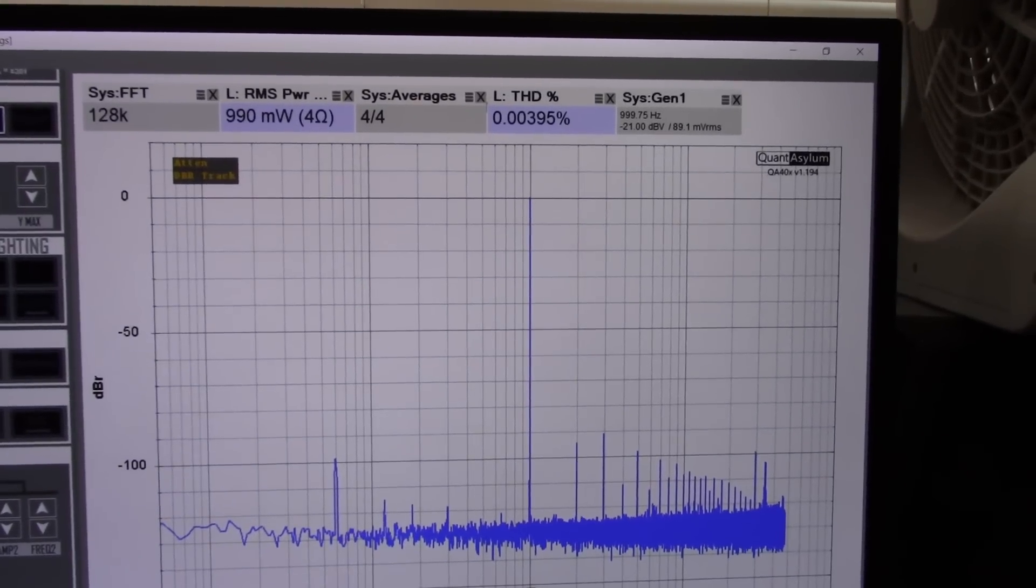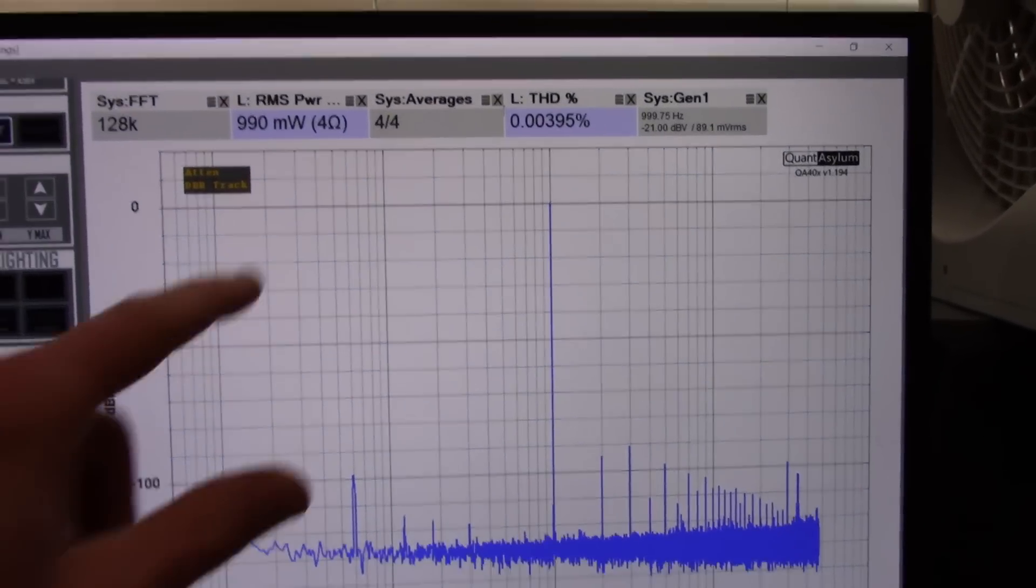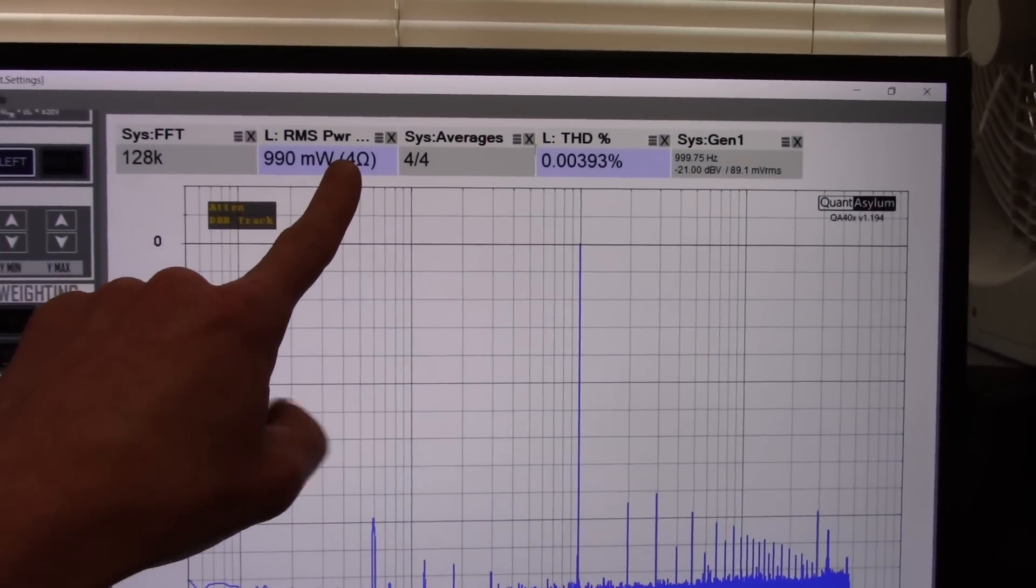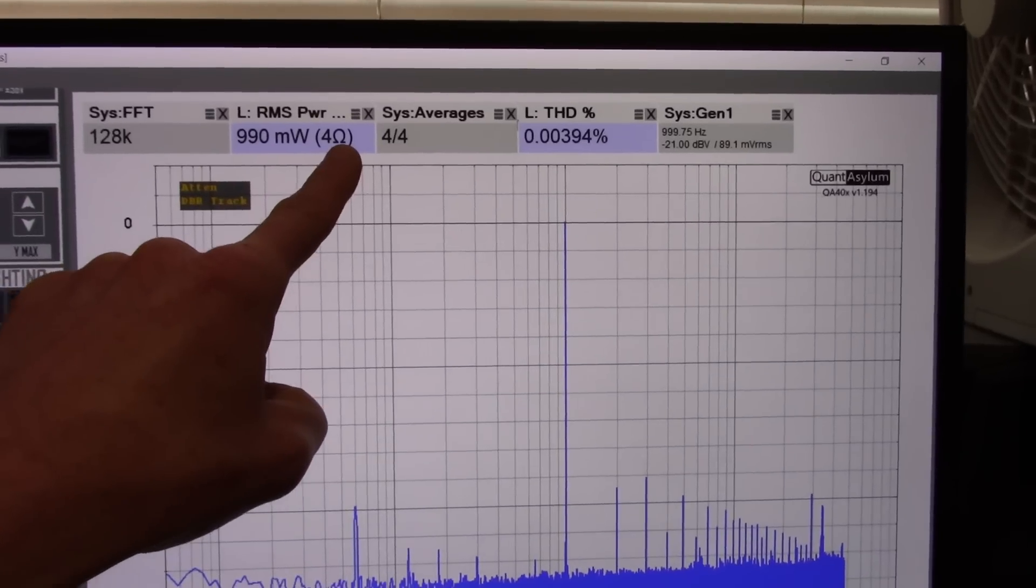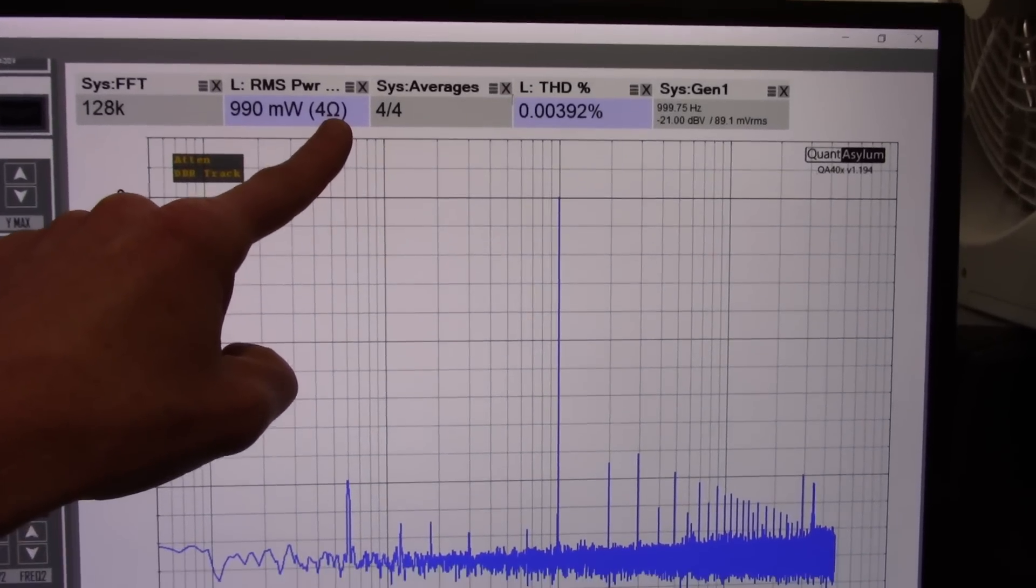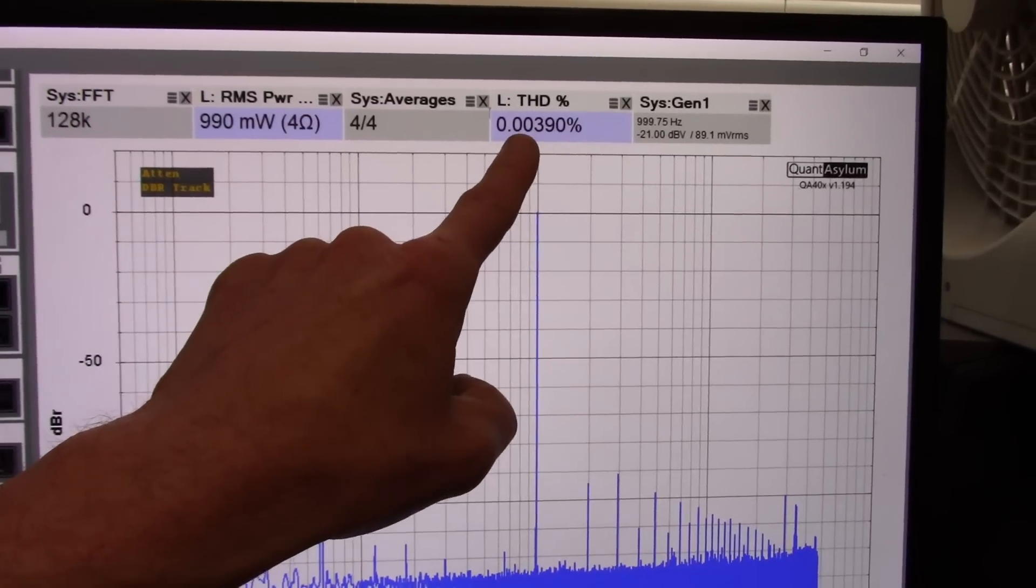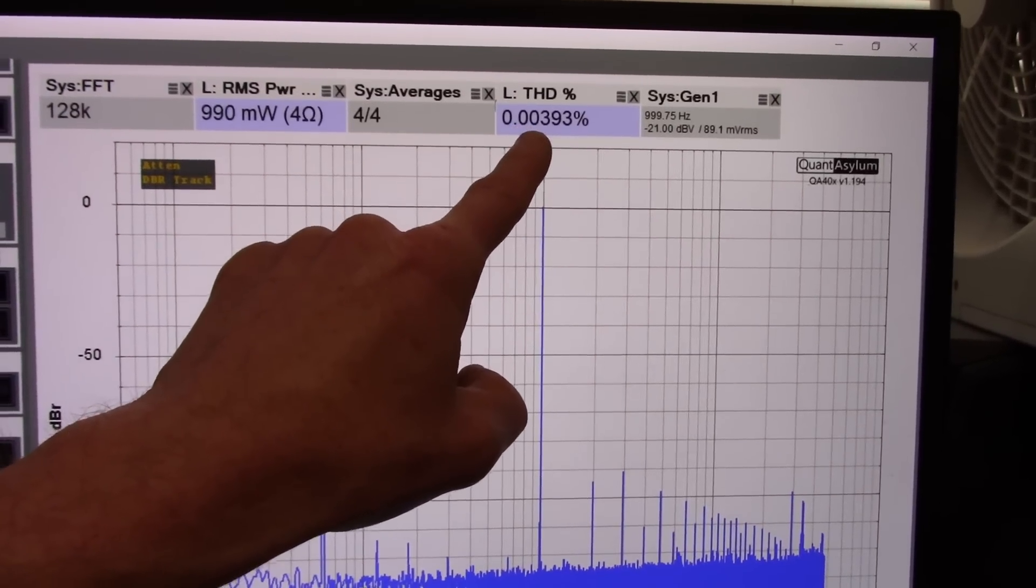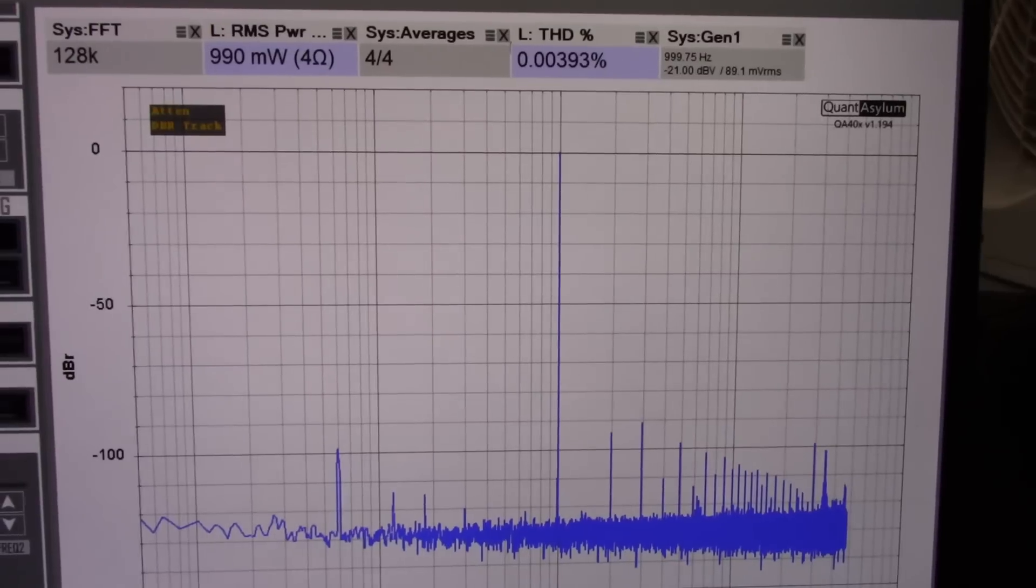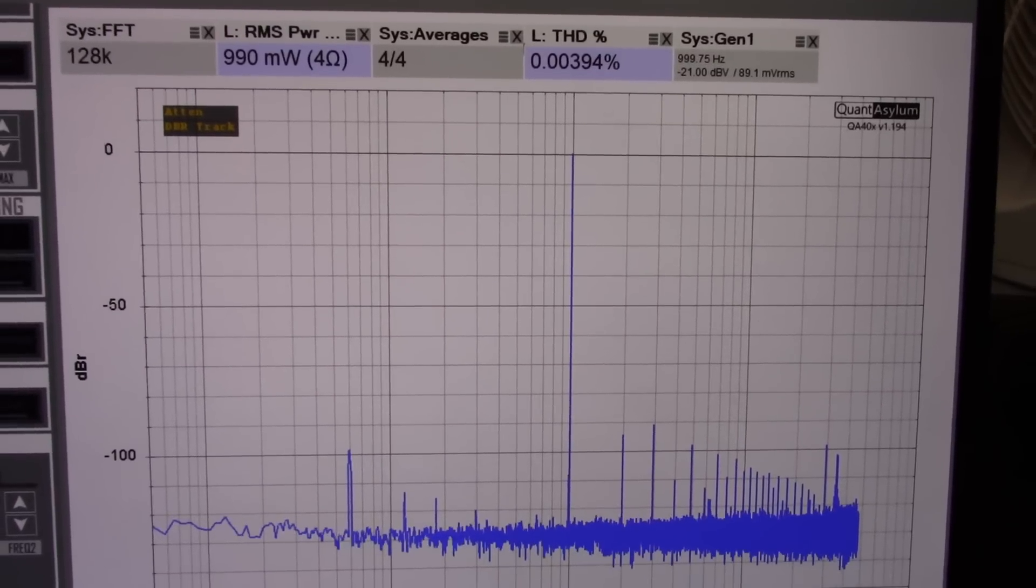Okay, looking at 4 ohm loads now. I wasn't lazy. This time I actually set the readout to say 4 ohms. So at a 1 watt level, it's still very excellent, around 0.004 percent. So let's crank it up and see what it does.